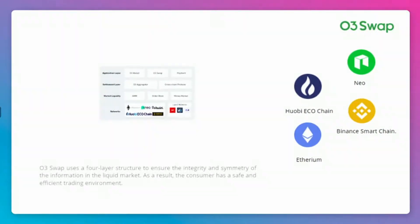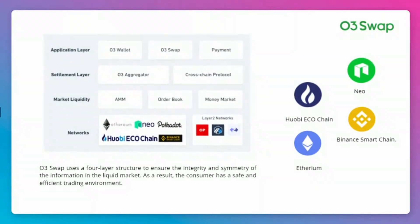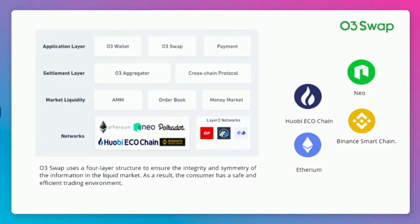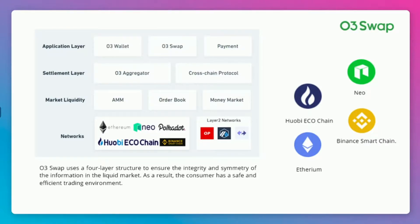O3 Swap uses a four-layer structure to ensure the integrity and symmetry of information in the market, giving consumers a safe and efficient trading environment. Layer one, the network layer, serves as the basis of the O3 Swap cross-chain protocol. It aggregates high-quality public chains and ecological chain systems, including Ethereum, Binance Smart Chain, NEO, Huobi Eco Chain, and credible layer-2 projects to provide cross-chain trading.